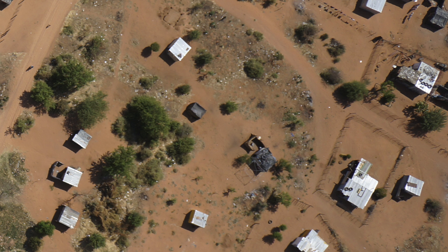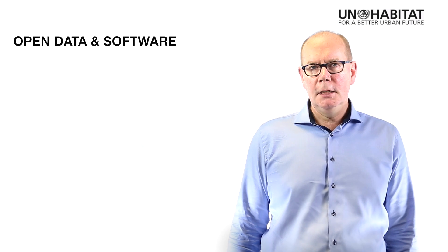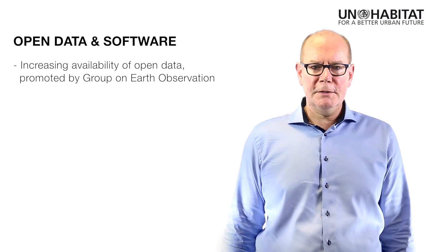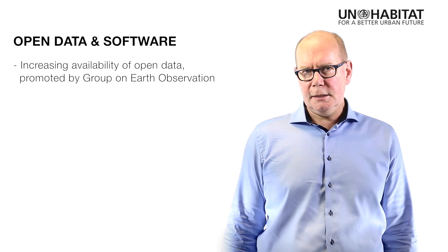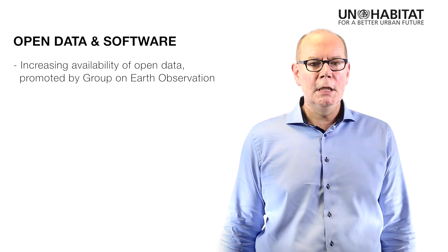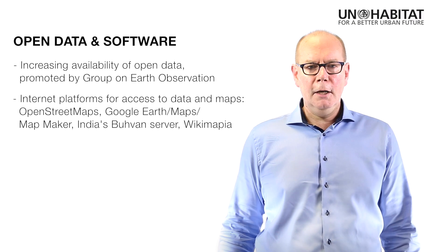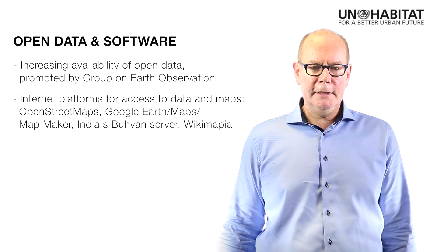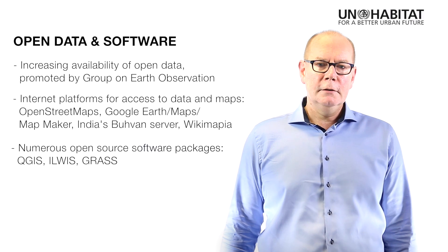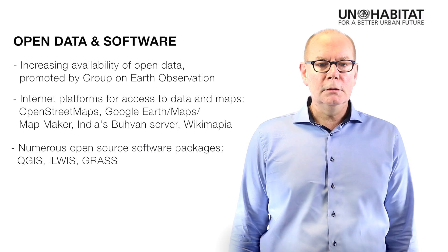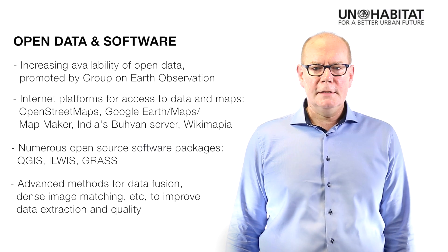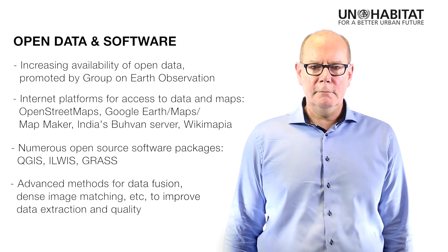The last trend I want to mention is open data and software. We see an increasing availability of open data, promoted by groups such as the Group on Earth Observation, and many countries are now making certain types of imagery freely available. We see internet platforms for data and map access — OpenStreetMap, Google Maps, India's Bhuvan server, and many others. There are numerous open source software packages for handling geospatial information, including QGIS, GRASS, and others. We also see advanced methods for data fusion, dense image matching, and other methods to improve data extraction quality.